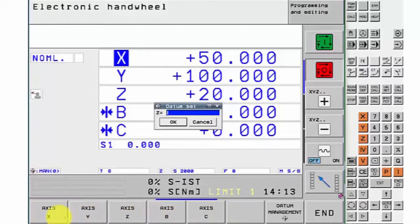We then enter a figure into this box and we can either zero it where we are or we can actually tell the machine where it is. In this case, I'm going to enter 20 into the Y figure and then I'm going to put zero in the other axes.